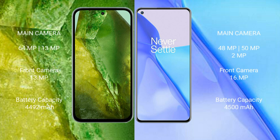Google Pixel 8a has a rear dual-camera setup: 64MP plus 13MP, and a front camera of 13MP. OnePlus 9 has a rear triple-camera setup: 48MP plus 15MP plus 2MP, and a front camera of 16MP.